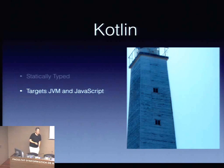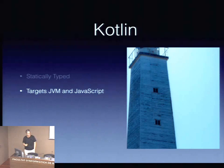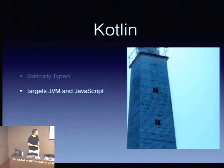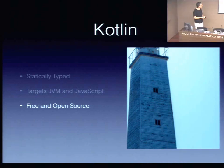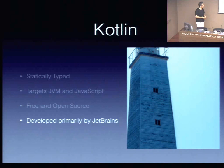Kotlin targets the JVM and JavaScript. We added JavaScript because if you don't, it's not considered a hipster language — everyone targets JavaScript, so we said what the hell. It's free and open source in all aspects, not a lock-in to IntelliJ. It's developed primarily by JetBrains but also has external contributors. One early contributor to the standard library was James Strachan, the guy behind Groovy.